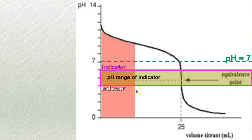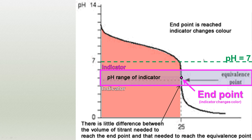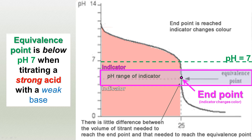In this case, I'm titrating with an acid, so the pH is going down. Here's the range of the indicator, and the equivalence point is going to be roughly within that range. This is going to be below pH 7 because I'm using a strong acid and a weak base. The equivalence point is right here and the endpoint is just above it — they are very, very close, which is why the titration works.